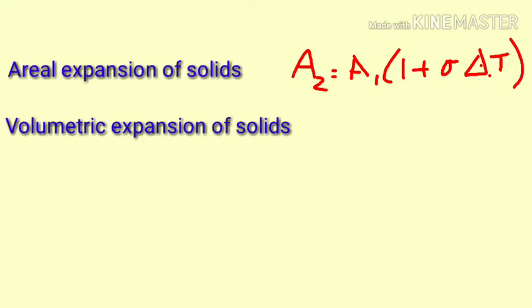Similarly, if a sheet of a solid is heated, its area expands. So you have areal expansion of solids is A2 is equal to A1, 1 plus the coefficient of areal expansion into delta T. If the volume of the solid increases, you have V2 is equal to V1, 1 plus beta delta T. This is called the volumetric expansion of solids.